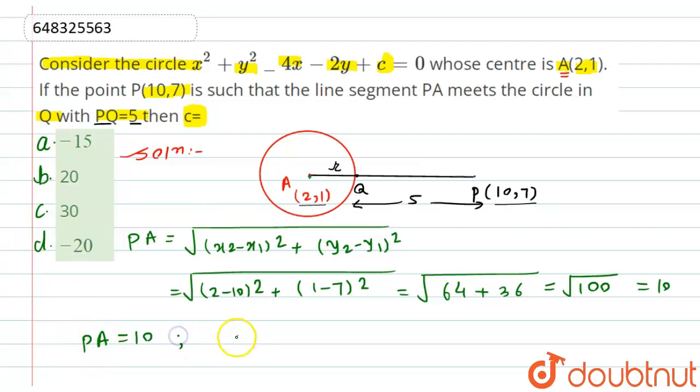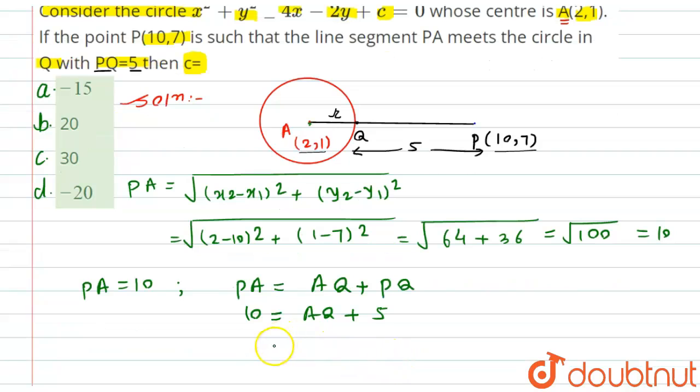Can I say that PA is the combination of AQ plus PQ. According to the question, PA is 10. This equals AQ plus PQ which is 5. From here, we get the value of AQ equals 5, which is the radius of the circle.